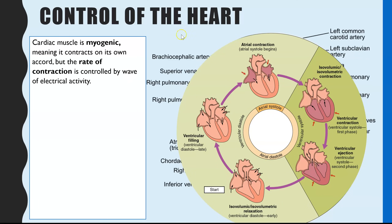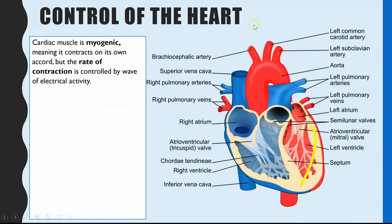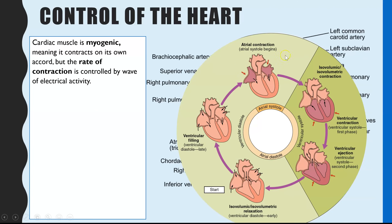Control of the heart first of all links to the control of the stages in the cardiac cycle which you learnt in year 12. Cardiac muscle is myogenic, meaning it can contract and relax on its own accord. It doesn't require a stimulus; however, the rate at which it contracts and relaxes is controlled by the nervous system. We'll be looking at how the different chambers of the heart contract in this cycle is controlled.